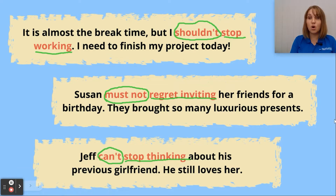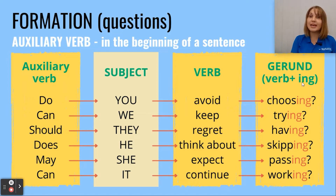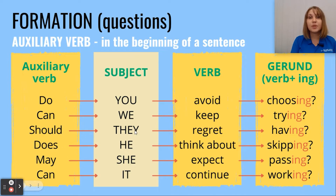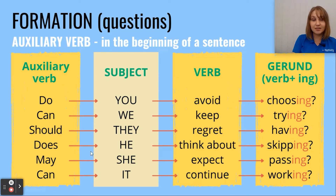Now let's discuss the question form. In a question, we start with the auxiliary verb, then the subject, the main verb, and the gerund. The auxiliary verb can be do, can, should, does, may, or others. Examples: 'Do you avoid choosing?' 'Can we keep trying?' 'Should they regret having?' 'Does he think about skipping?' 'May she expect passing?' 'Can it continue working?'